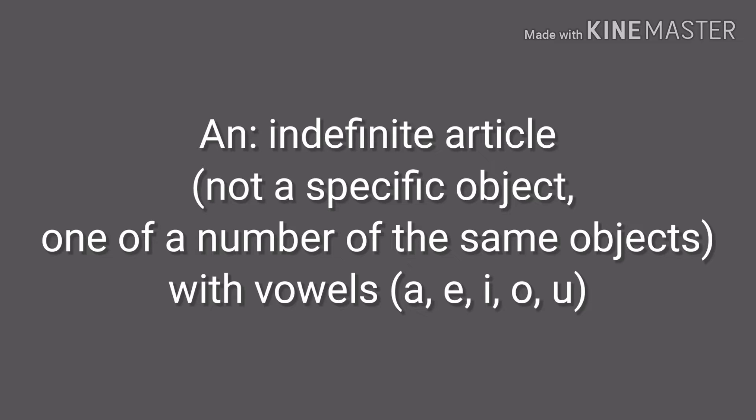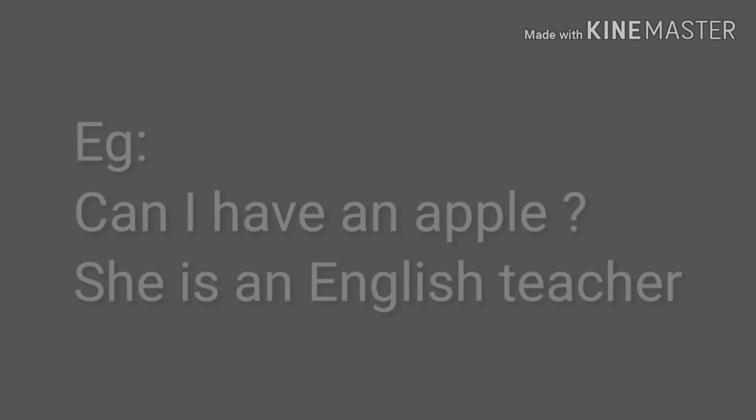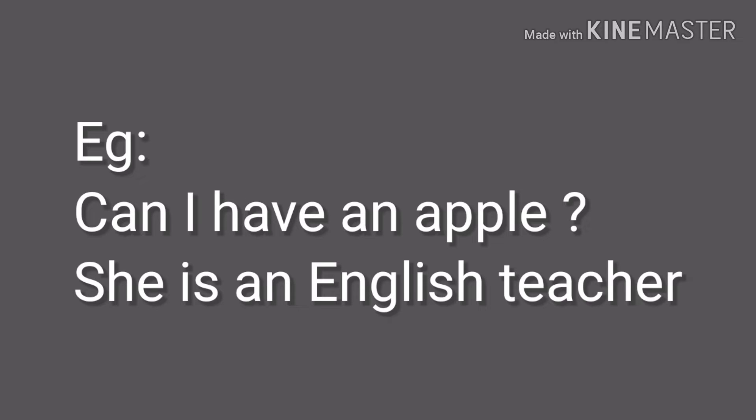Now the indefinite article 'an': same idea — not a specific object, one of a number — but this time used with vowels: a, e, i, o, u. Example: 'Can I have an apple?' We say 'an apple' because the word 'apple' begins with the vowel A, and we cannot combine two vowel sounds, so we use 'an' instead of 'a'.